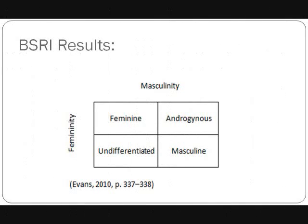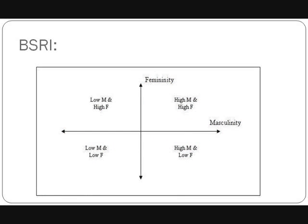The BSRI does not consider gender to be binary and does not consist of only male and female. BSRI measurement results will indicate one of four possible classifications: masculine, feminine, androgynous, or undifferentiated. These classifications tell us more about an individual's sex typing. Sex typing determines how much a person has applied gender schema to him or herself.